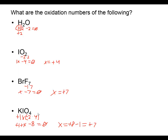Sometimes it's easier to break up an ionic compound into its ions. We could have said we have the potassium ion, a monoatomic ion with a plus one charge, and we have the periodate ion IO₄⁻.